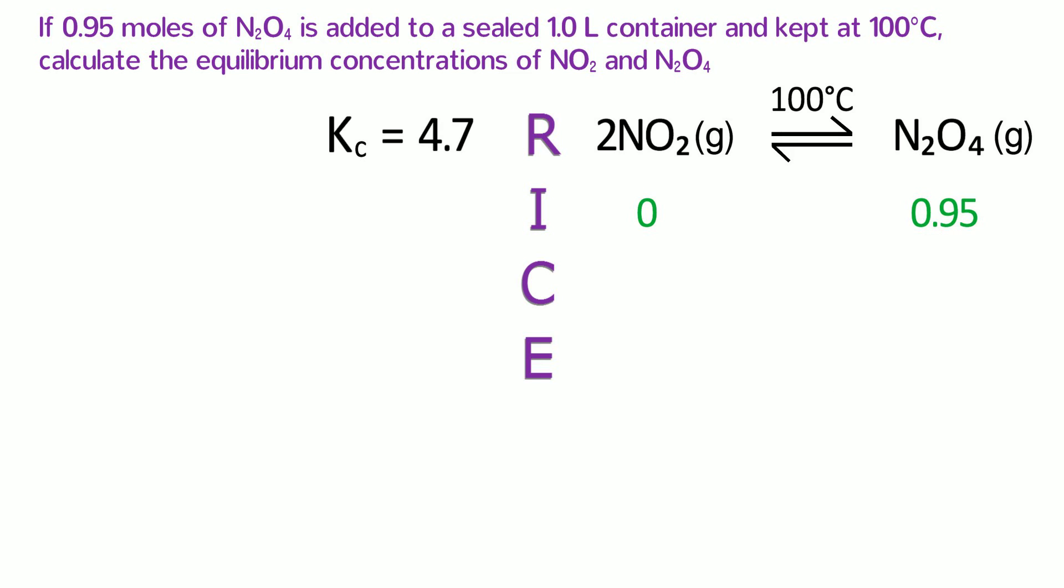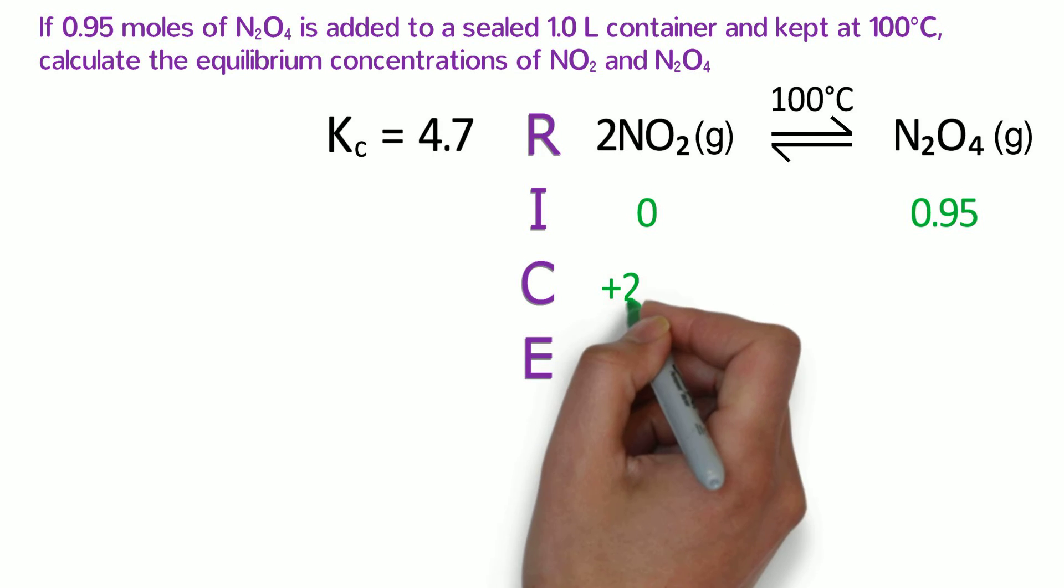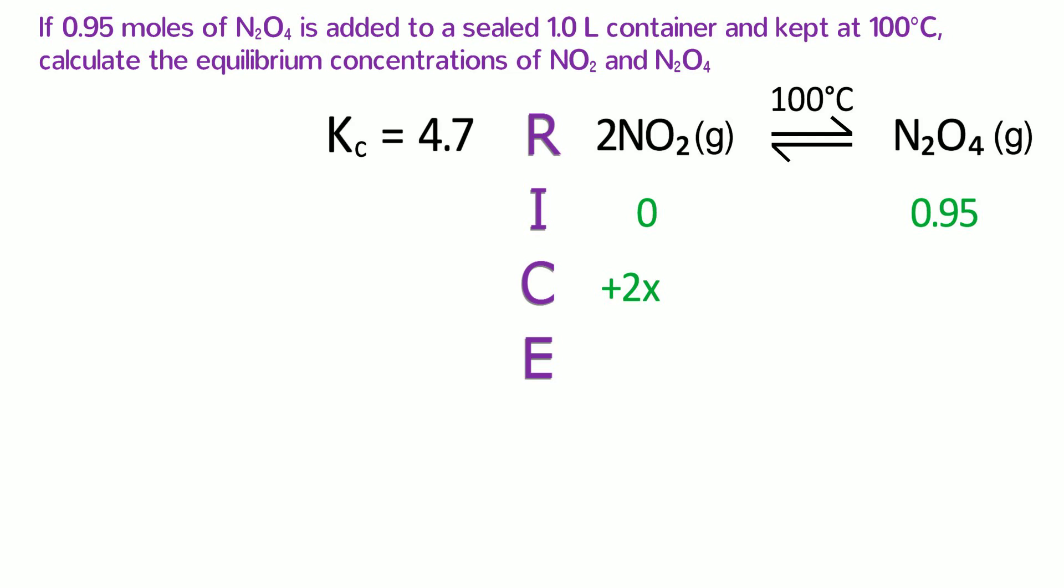This problem states that we are starting with N2O4, which is our product, so the initial molarity of NO2 is 0, and the initial molarity of N2O4 is 0.95. As this reaction progresses, the amount of nitrogen dioxide should increase, so the change in NO2 should be plus 2X. The 2 comes from the coefficient in the balanced reaction. Because the reaction will progress to the left, the N2O4 molarity will decrease, so its change should be minus X. To get the equilibrium molarity, simply add the initial end to the change. The result is 2X for NO2 and 0.95 minus X for N2O4.